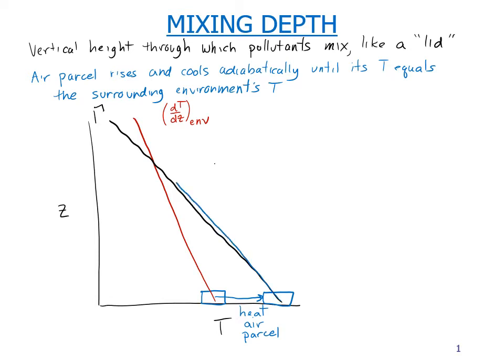And it will rise and cool until its temperature is equal to that of the surrounding environment, or where these two lines intersect. And this point is then the mixing depth. Because if the parcel were to rise above that point, it would be cooler than the surrounding environment, and then it would sink back down.